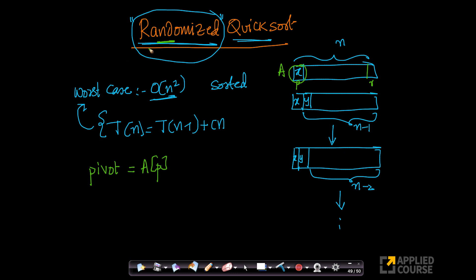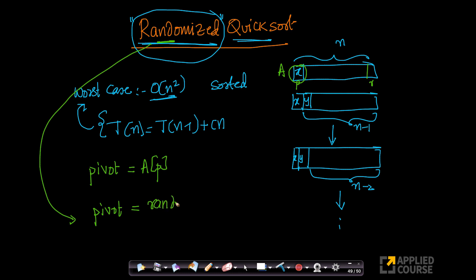So the randomized quicksort says — and this is extremely innovative — instead of picking the pivot to be the first element, what if I pick my pivot to be a random element from my array a, from index p to index r? Why should I always pick the first element as my pivot? I can pick any element as my pivot element. I will pick a random element — let's see how it works.